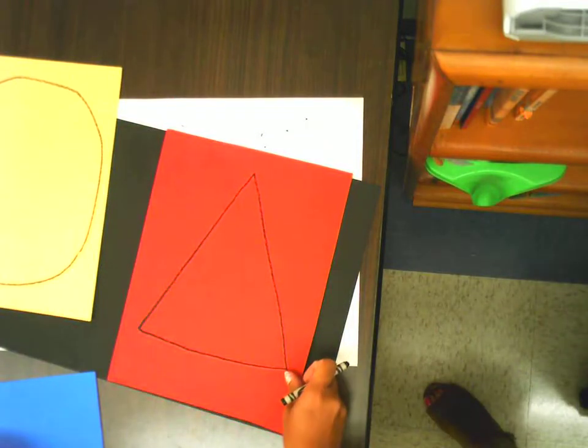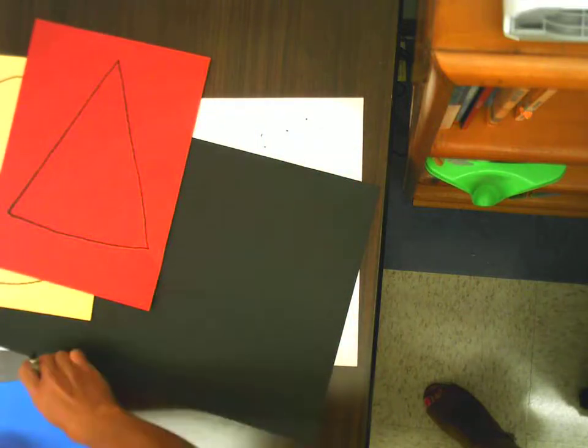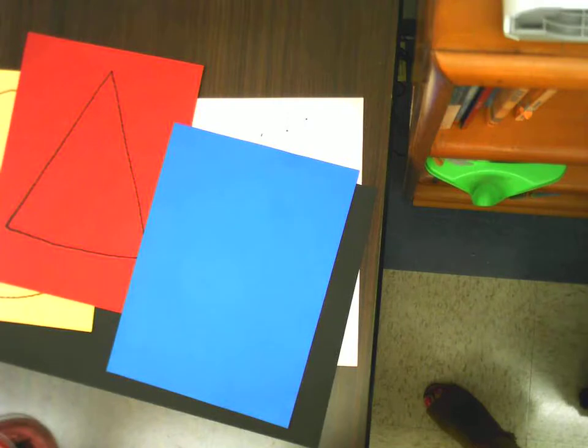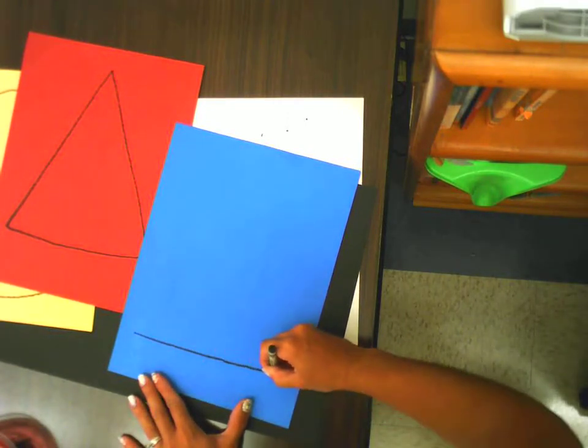The last shape will be a square. You are going to go across your blue paper, up, across, and down.